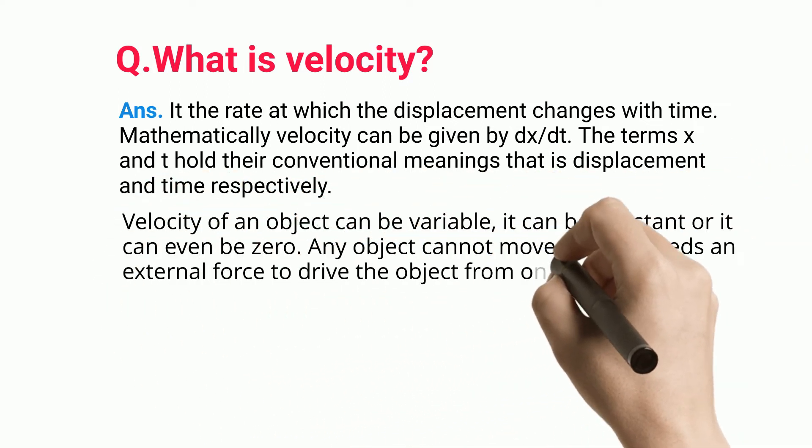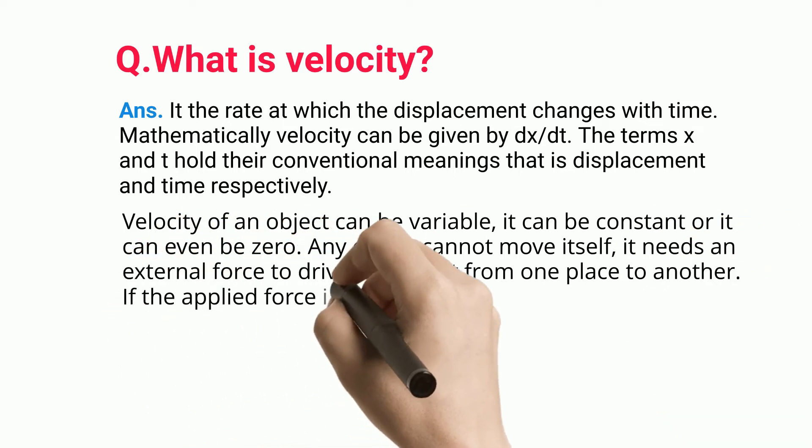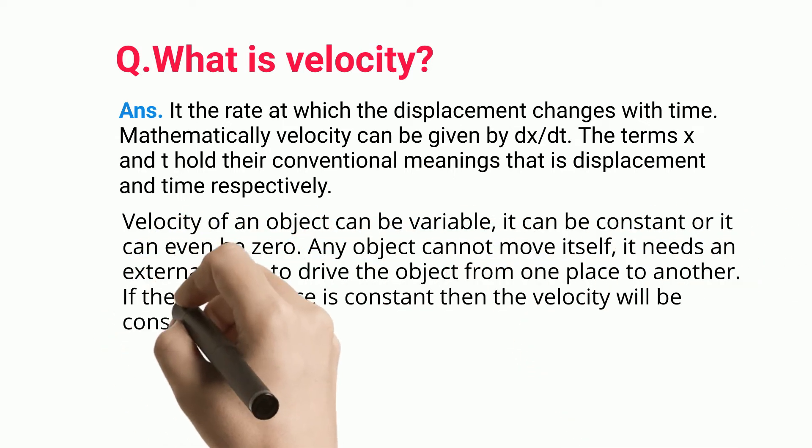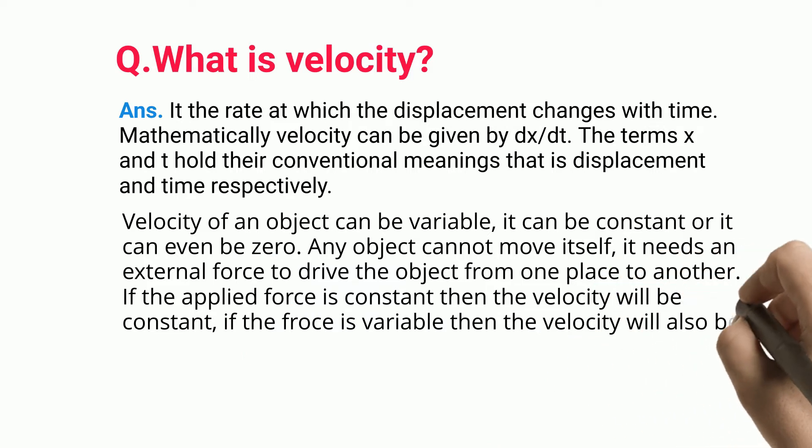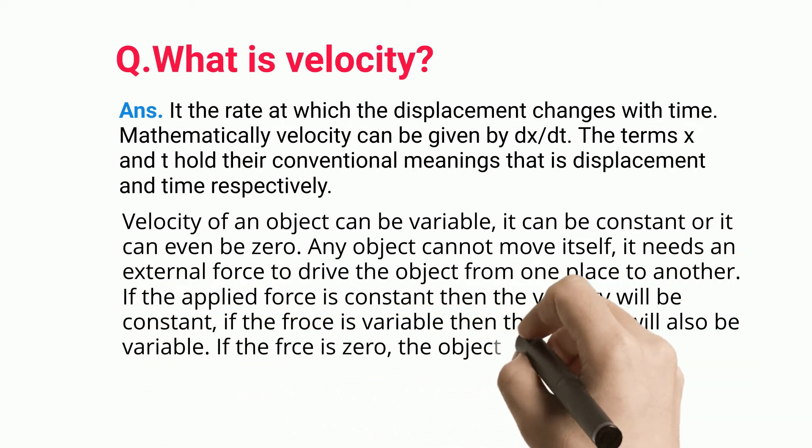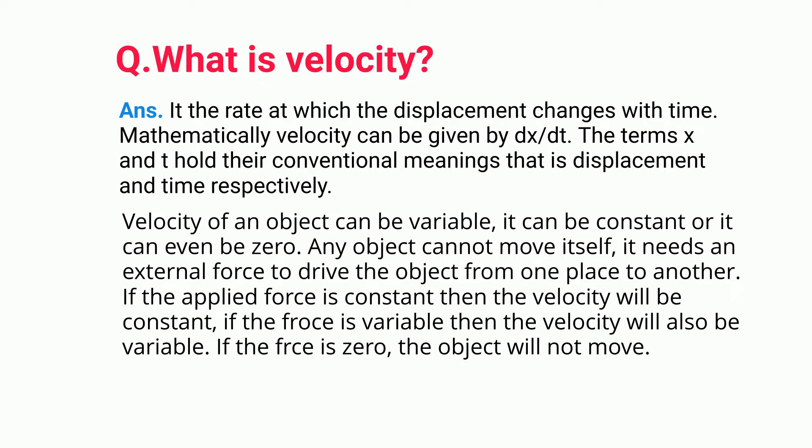Any object cannot move itself; it needs an external force to drive it from one place to another. If the applied force is constant, then the velocity will be constant. If the force is variable, then the velocity will also be variable. If the force is zero, the object will not move.